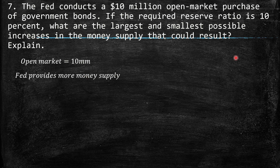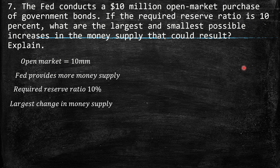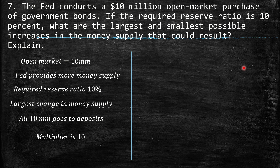When there is an open market purchase, the Fed provides more money supply — it injects money into the economy. The exercise provides a required reserve ratio of 10%. For the largest change in money supply, imagine all $10 million goes to deposits and flows from bank to bank: only 10% remains in each bank, 90% moves to the next. The multiplier is 10 — the reciprocal of 10%, which equals 1/10. So we expect an increase of $100 million.